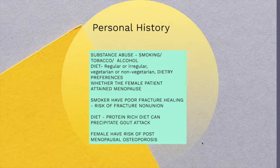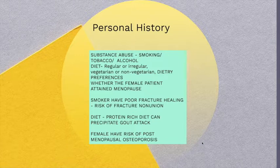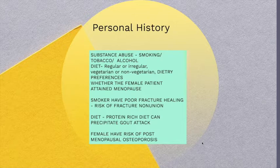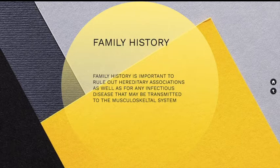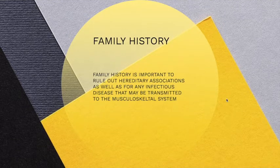Substance abuse is important and needs to be asked for every patient, as smoking, tobacco, and alcohol can have implications for several orthopedic disorders. You have to ask about the diet of the patient and whether the female patient has attained menopause or not. Smokers have poor fracture healing and are at risk of non-union. A protein-rich diet can precipitate gout attacks in at-risk individuals, and females have risk of postmenopausal osteoporosis. Family history is important to rule out any hereditary association as well as for infectious diseases that can be transferred to the musculoskeletal system, like tuberculosis.